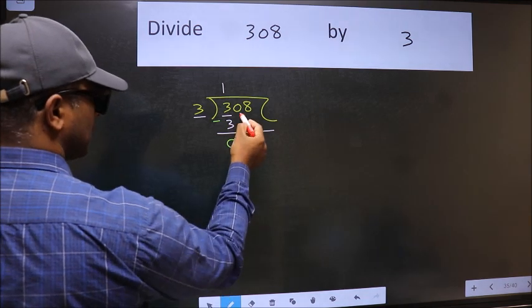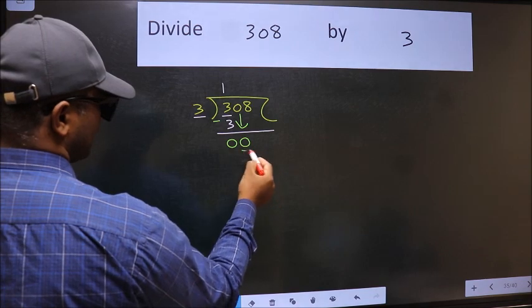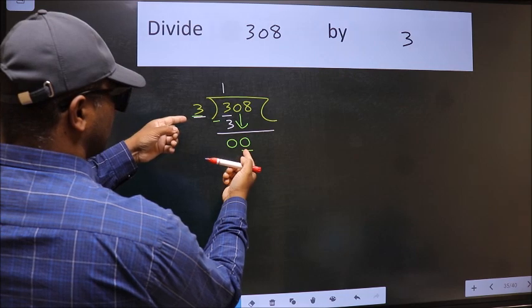After this, bring down the next number. So, 0 down. Now, here we have 0 and here 3. 0 is smaller than 3.